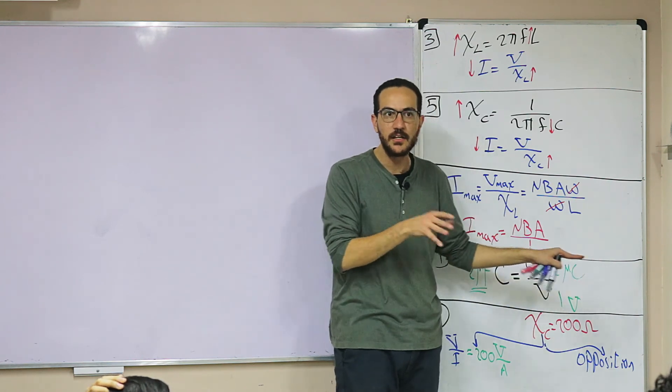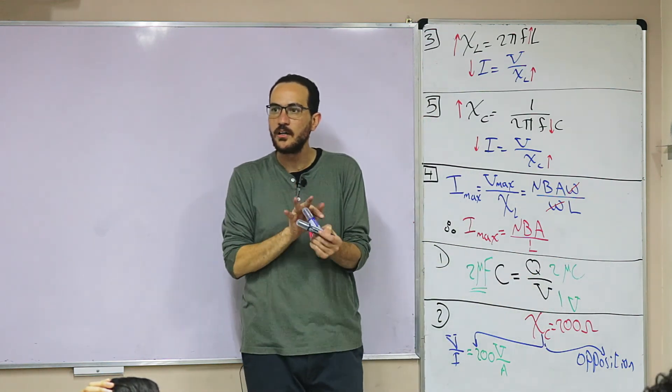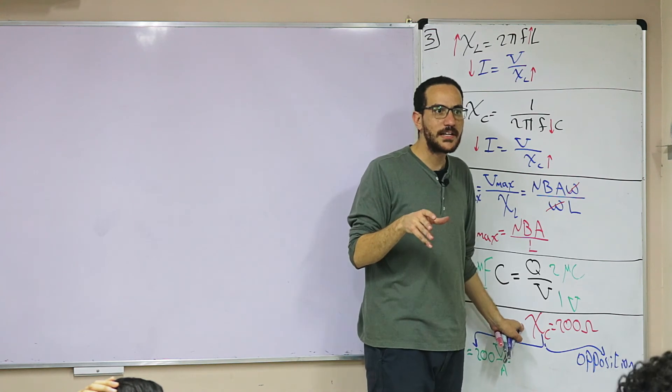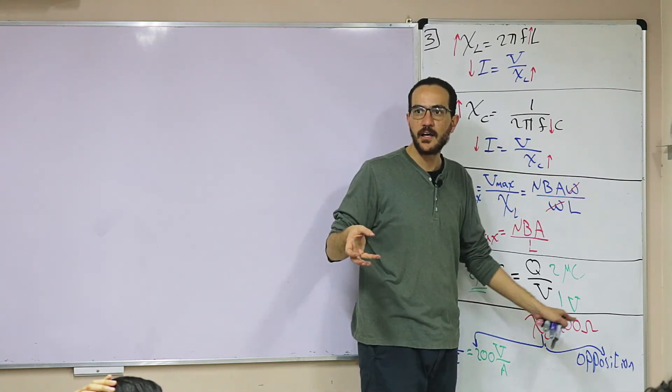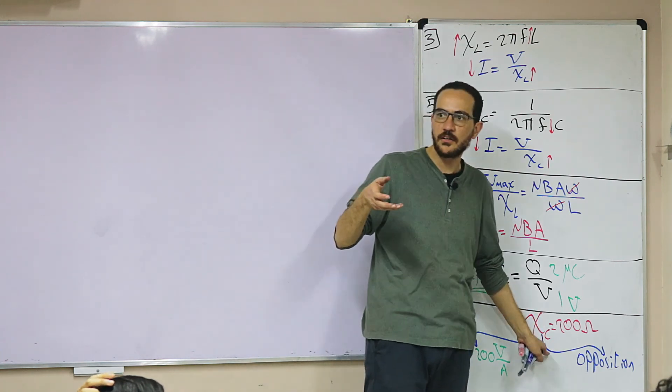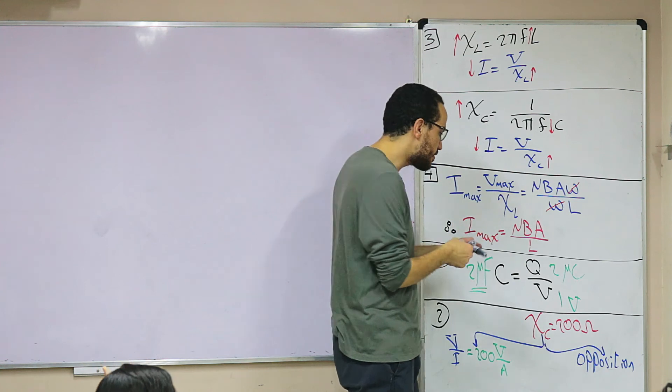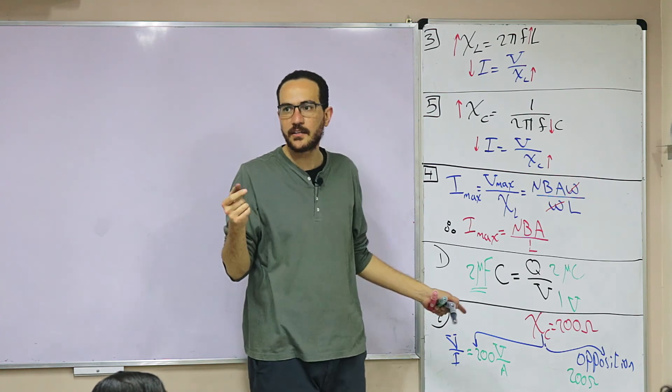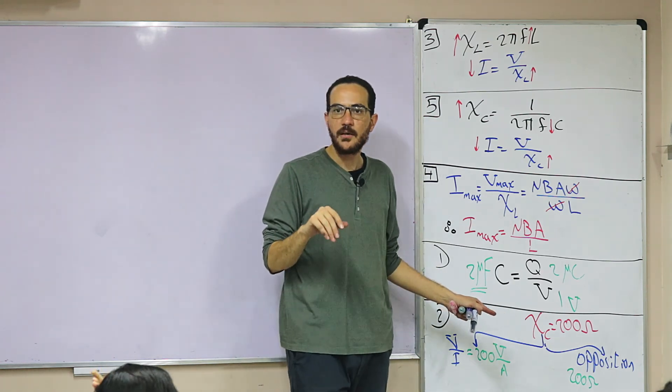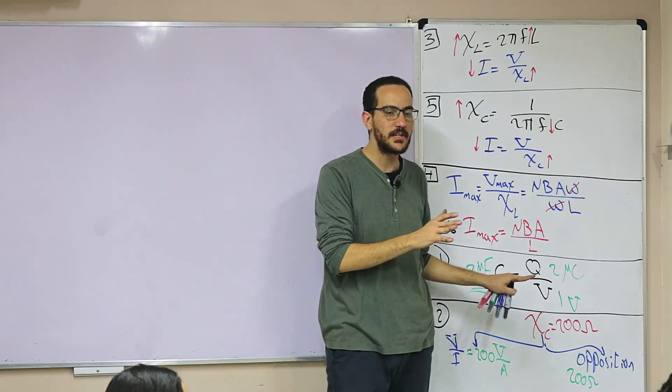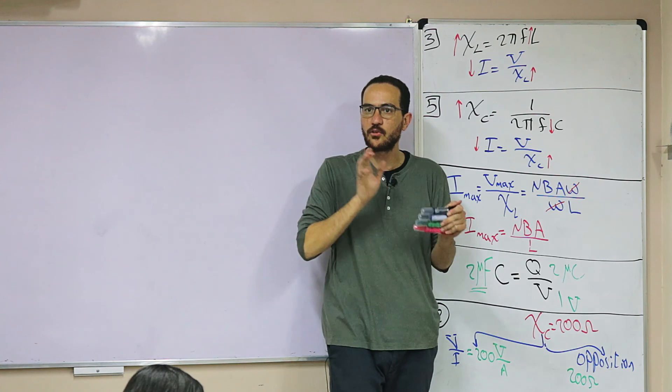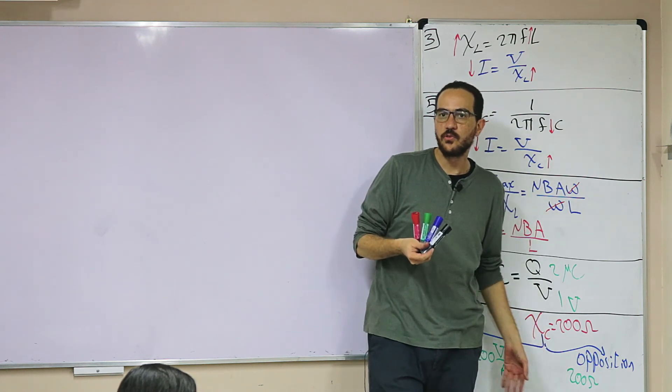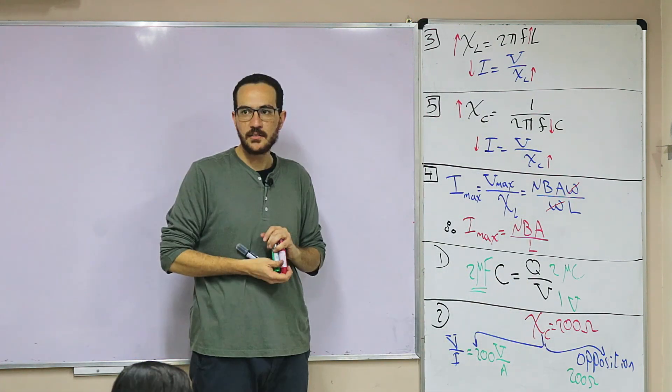What's meant by the inductive reactance is 100 ohm? The model answer wrote: it means that the opposition to alternating current due to existence of a capacitor in the circuit is 200 ohm. When I say capacitive reactance or inductive reactance, I can write the two definitions. It means that the opposition to alternating current due to existence of a capacitor is 200 ohm.